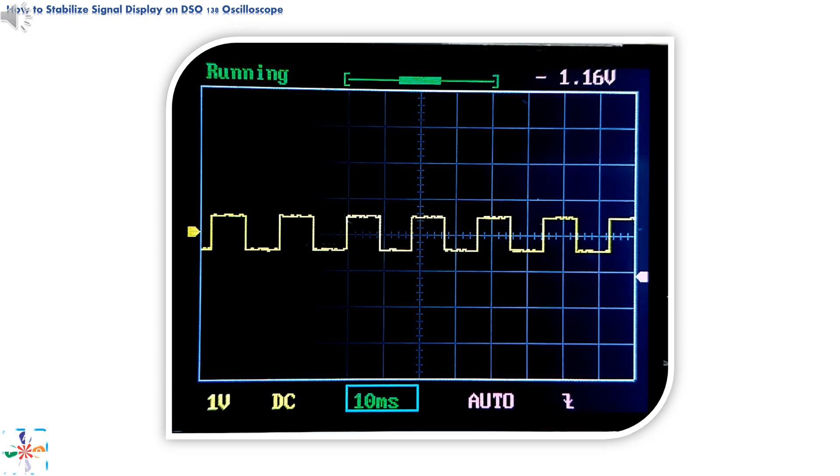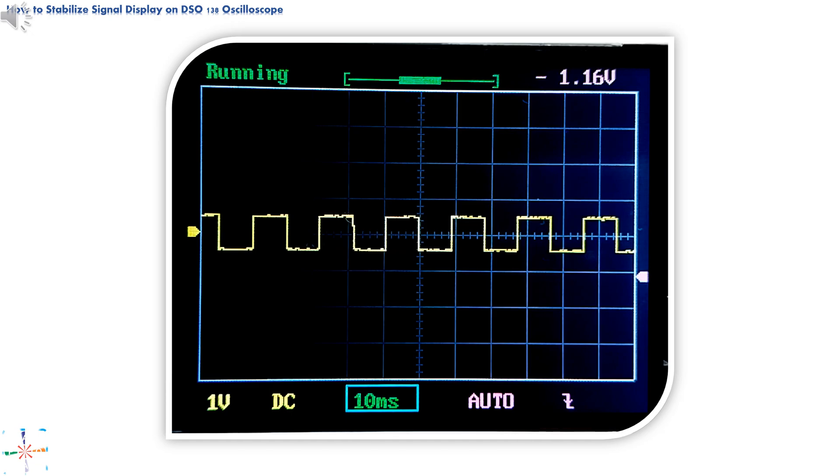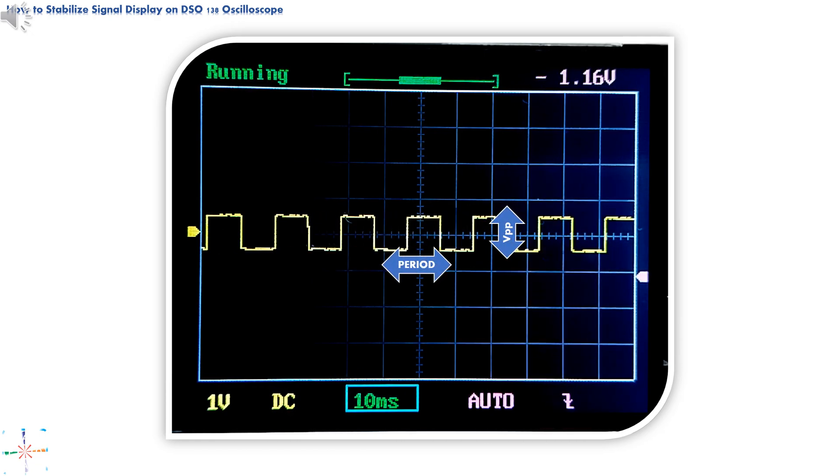As you can see, our signal is all over the place. Of course, this is unacceptable, not only because our signal won't stay still, but we cannot see or measure with any accuracy anything about signal, for example, point-to-point value, period of the signal and etc.